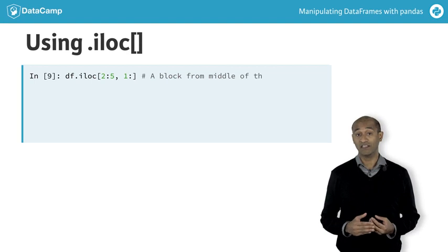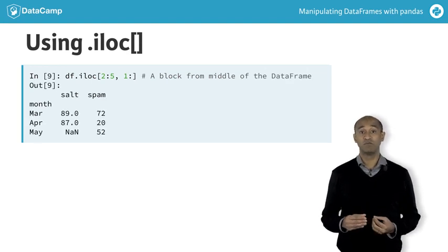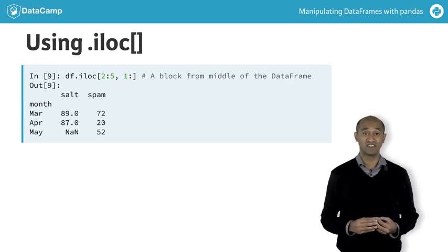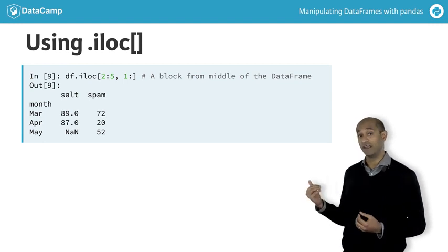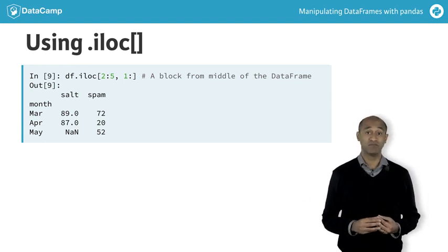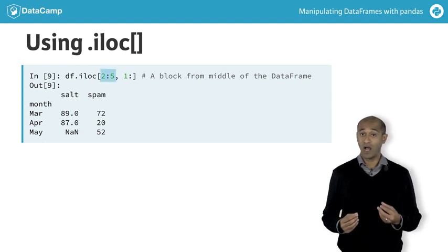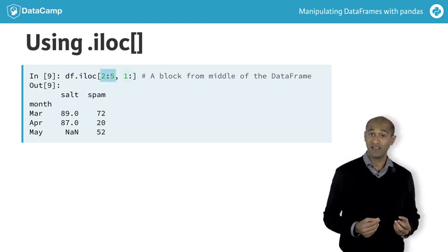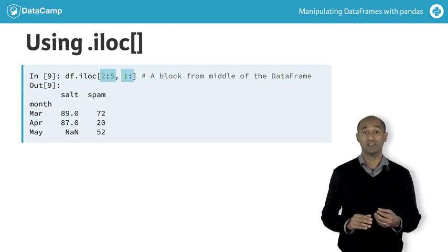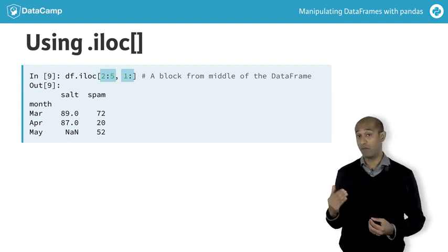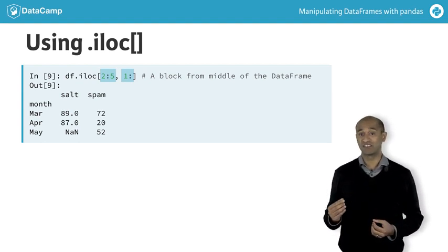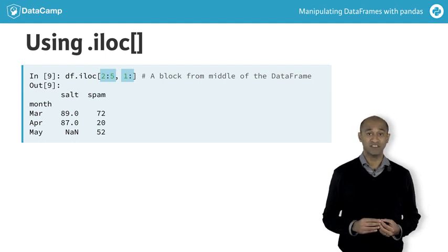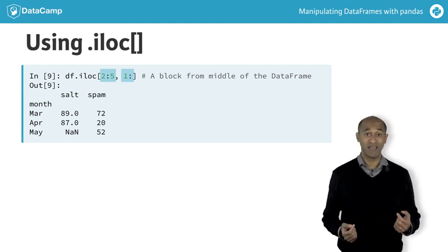Using .iloc is very similar to using .loc, simply with positional integers specifying slices rather than labels. Here, we extract the same slices before using .iloc, from row 2 up to but not including row 5, and from column 1 to the last column. Remember, omitting the explicit start or end in a slice means we slice from the beginning or to the end respectively.